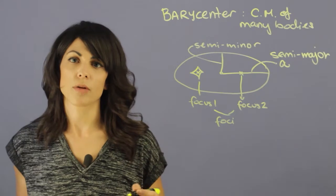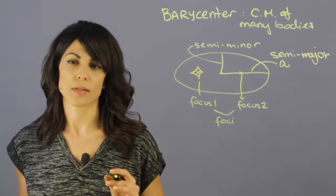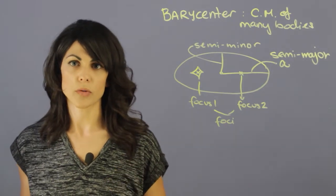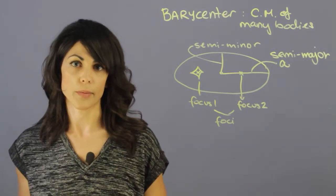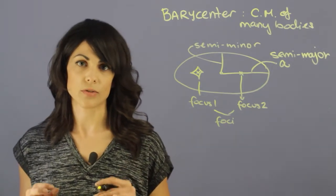Another important term for orbits, and probably one of the most important terms for elliptical orbits, is eccentricity.